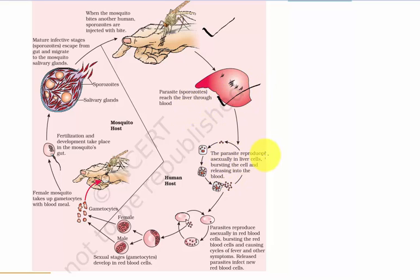In the liver, the parasite reproduces asexually. They invade the liver cells and reproduce asexually, and that results in the bursting of that cell. So new sporozoites which are produced are getting released into the blood cells.